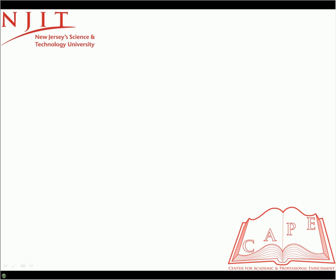In this example, we have five greater than zero. The symbol is pointing to the right, so whatever number is on the left has to be greater than the number on the right. Five is greater than zero, which is a true statement.